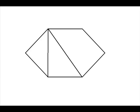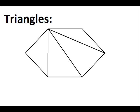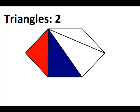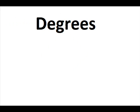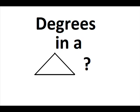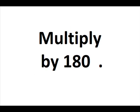Now that you've drawn all your lines, count the triangles inside. You'll find that you've always got two less than there are sides. And how many degrees are there in a triangle? That's why you multiply by 180.